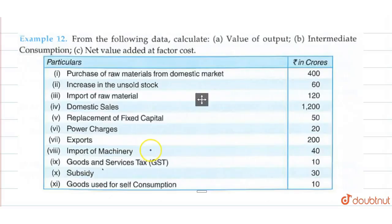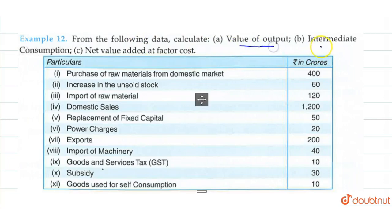Hello guys, let's do the question. What is our question here? From the following data, calculate the value of output, intermediate consumption, and net value added at factor cost.